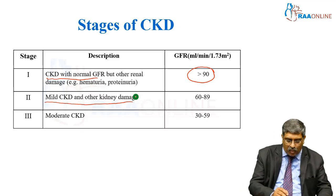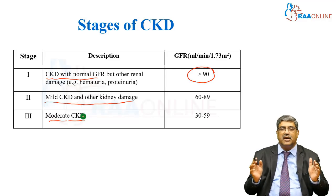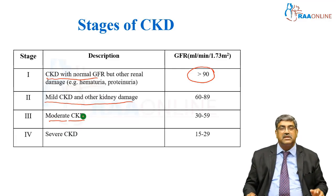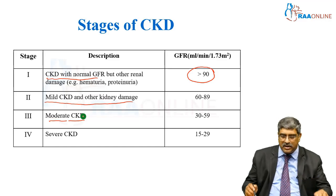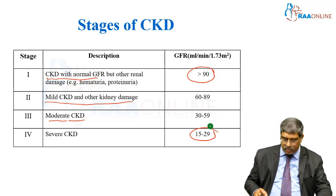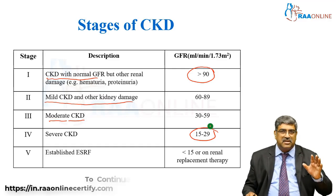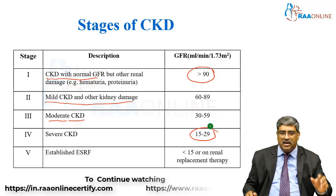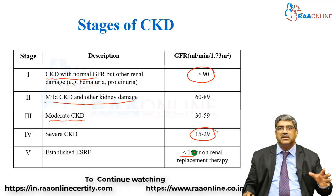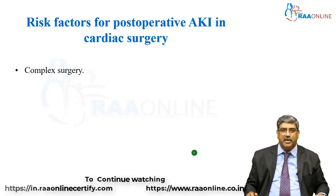Stage three is moderate chronic kidney disease where the GFR is between 30 to 59. Stage four is severe chronic kidney disease where the GFR is between 15 to 29. End-stage renal failure is defined as a GFR less than 15, or the patient being on dialysis or renal replacement therapy.